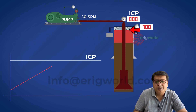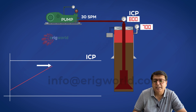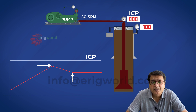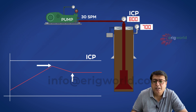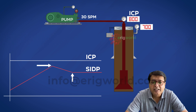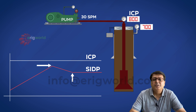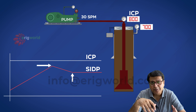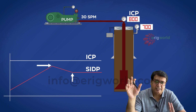When gas is at surface, casing pressure will be maximum. When gas goes out, casing pressure decreases. When all the gas goes out, casing pressure becomes constant, and when I shut in the well, both pressures are equal — equal to SIDP.